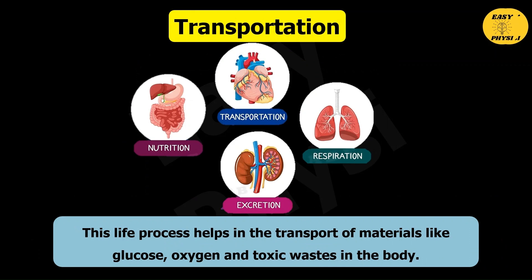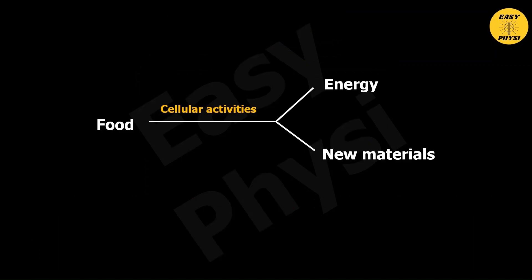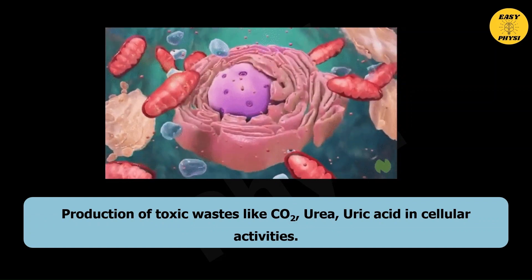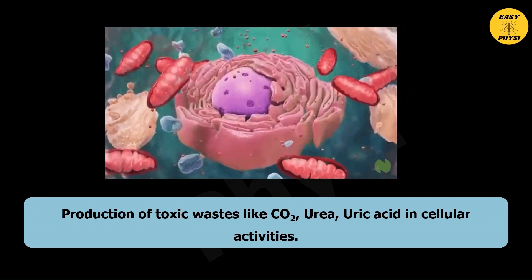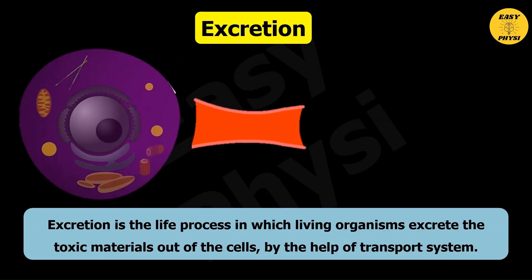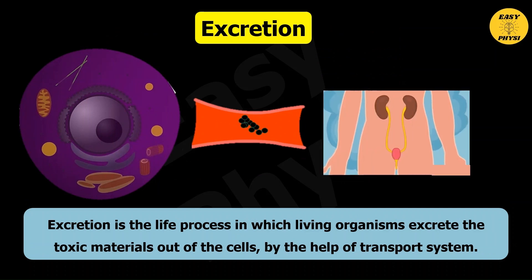The transport life process helps in the transport of materials like glucose, oxygen, and toxic waste in the body. Cells use these materials for production of energy and to make new complex molecules. Production of toxic waste like carbon dioxide, urea, and uric acid occurs during cellular activities. Excretion is the life process in which living organisms excrete toxic material out of the cell by the help of the transport system.